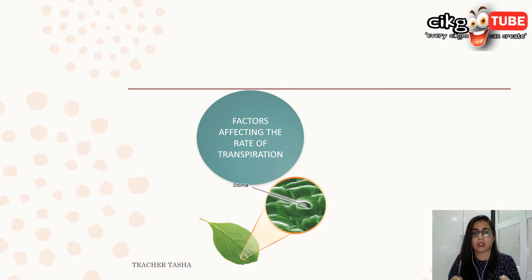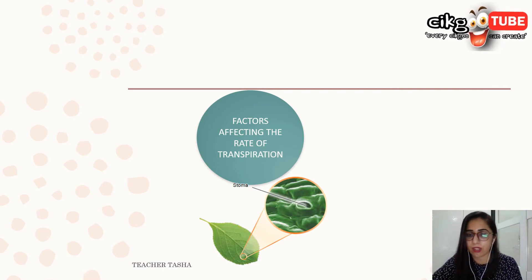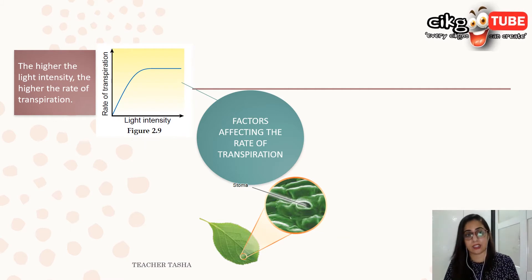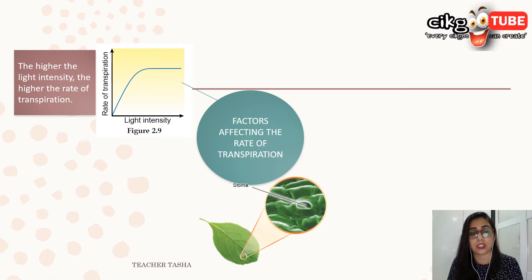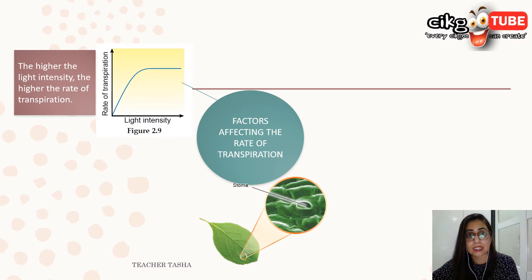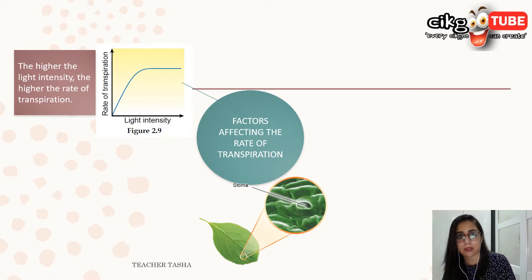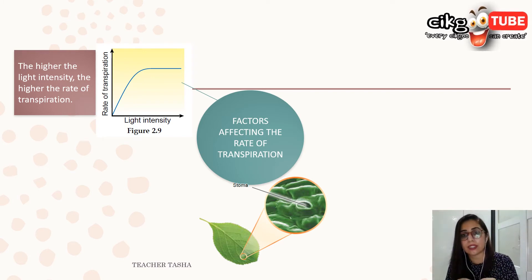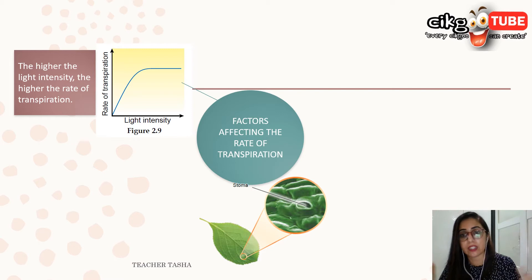Now let's look at the four main factors with graphs. First, light intensity: the higher the light intensity, the higher the rate of transpiration. Sunlight provides heat energy for the leaves and increases evaporation of water. An increase in light intensity stimulates the stomata to open, which increases the rate of evaporation, so more water diffuses out from the leaves through the stomata.